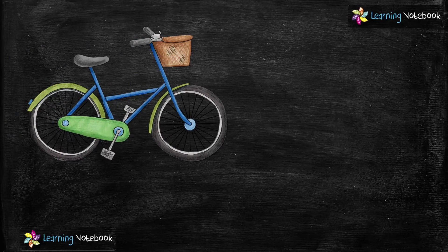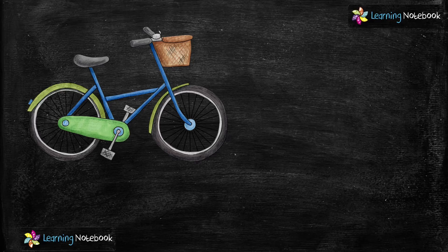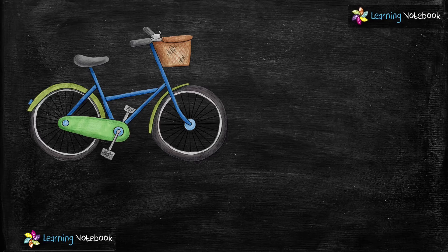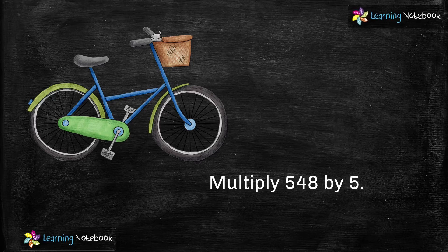Now the next example is: Myra wants to buy a new bicycle. She saves rupees 548. Her mom tells her that she needs to save 5 times this amount. So how much money does Myra need to buy this bicycle? Again, this is a case of multiplication. So here we will multiply 548 by 5.